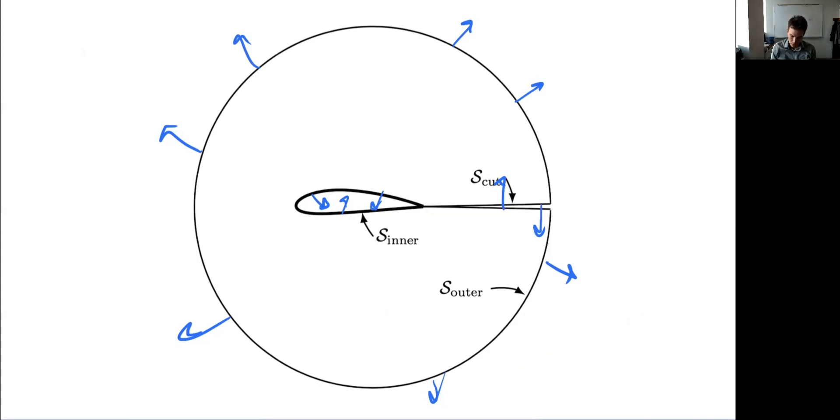For convenience, we're going to call this control surface, the outer control surface, the one that wraps just around the body, the inner, and then the cut will represent both of these—the cut that goes towards the body and the other cut that comes outward.